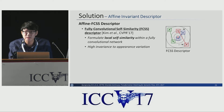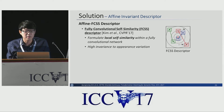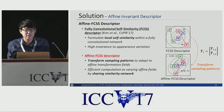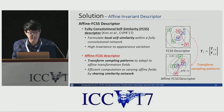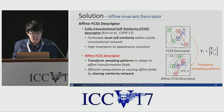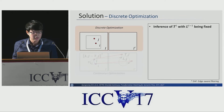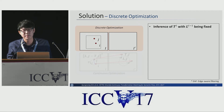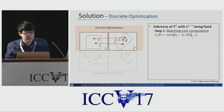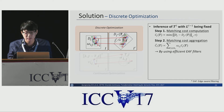To measure matching similarity, we employ the FCSS descriptor proposed in CVPR this year, which formulates local self-similarity within a fully convolutional network. To provide affine invariance of the descriptor, we propose an affine FCSS descriptor that transforms the sampling pattern. For efficient computation, we estimate the FCSS descriptor by sharing the similarity network. In discrete optimization, we formulate this problem as a filter-based label optimization, computing matching cost using the FCSS descriptor and aggregating it using efficient edge-aware filtering.